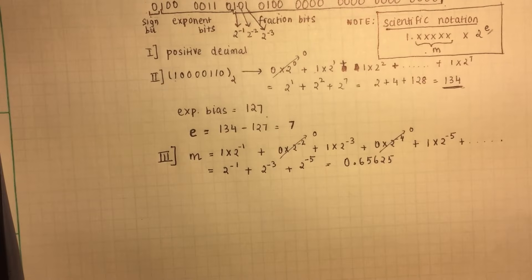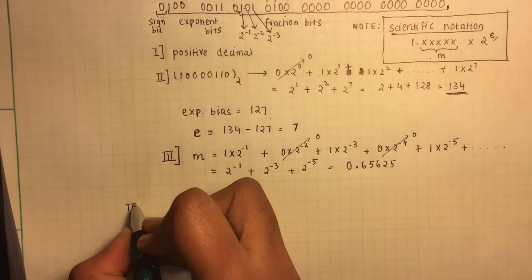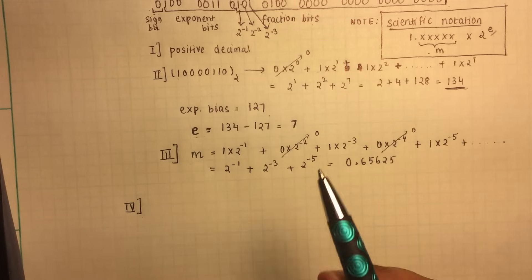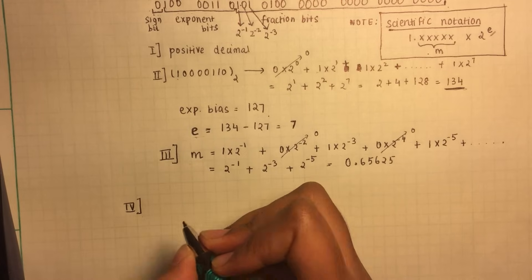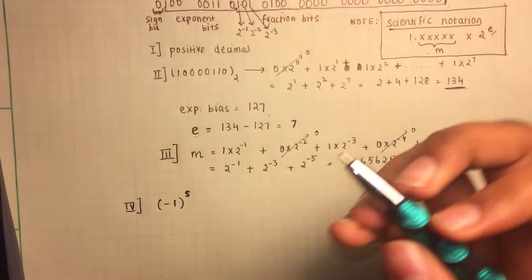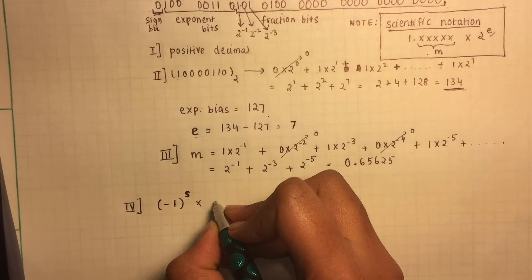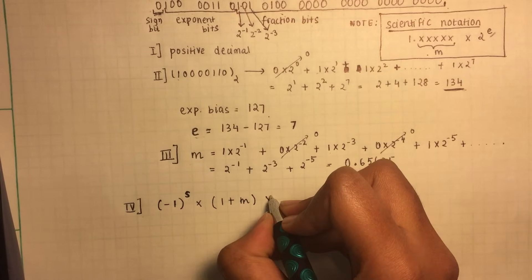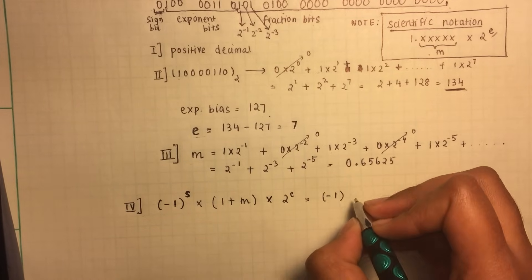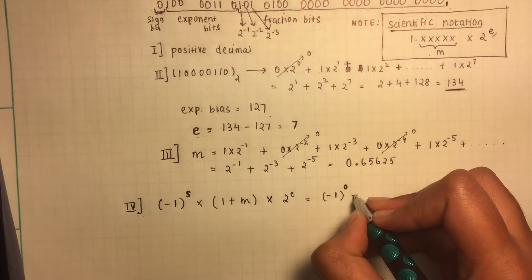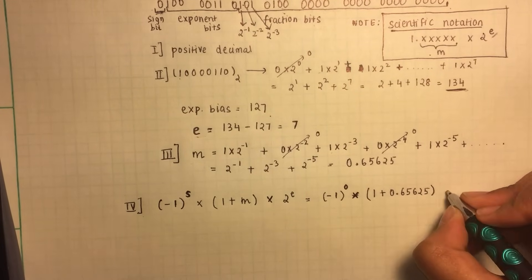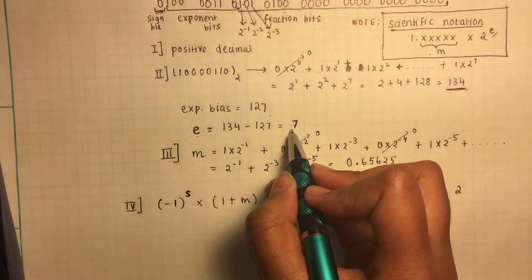Now to find the decimal equivalent, I'm going to give the general form. This helps figure out any decimal equivalent once you get the e and m values. The way to find out is by putting it into this general form: negative 1 to the power s, where s is the sign bit — it's the 0 or 1 bit. Times 1 plus the mantissa. Times 2 to the power of the exponent. So in this case, negative 1 to the power 0, because that is our sign bit. And then you multiply it by 1 plus 0.65625. And then you multiply it by 2 to the power e. And in this case, we have gotten our e as 7.